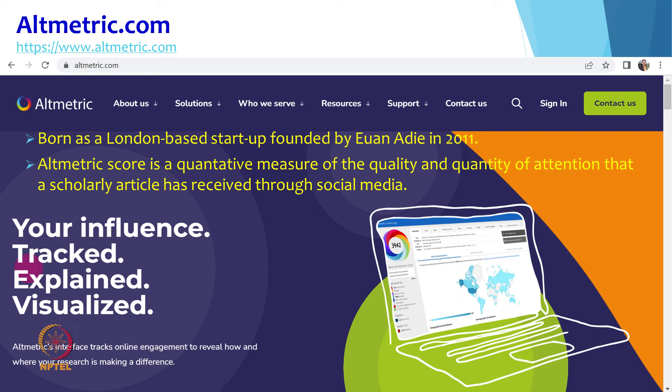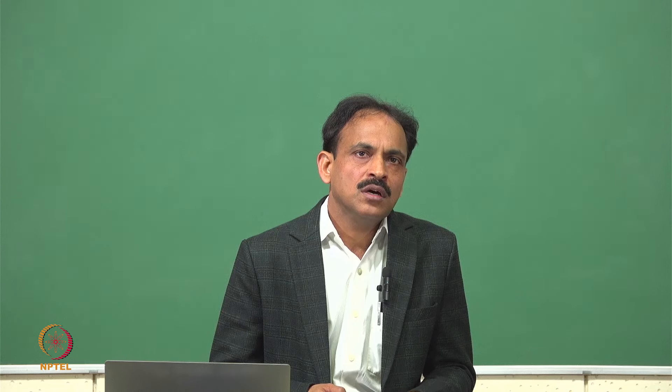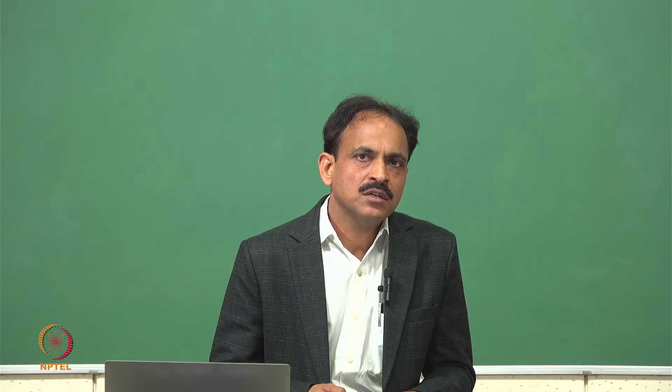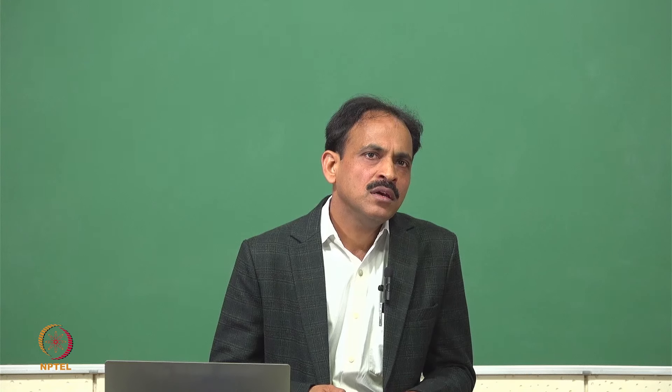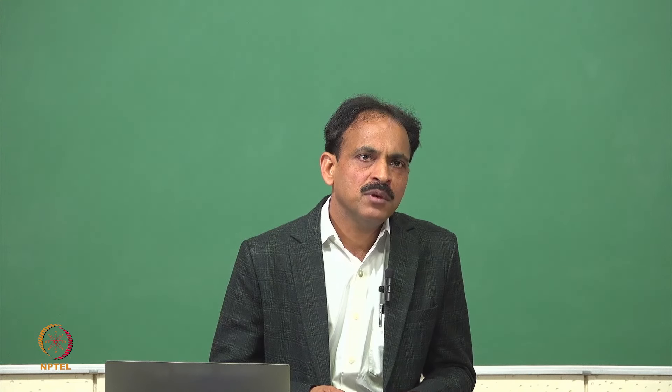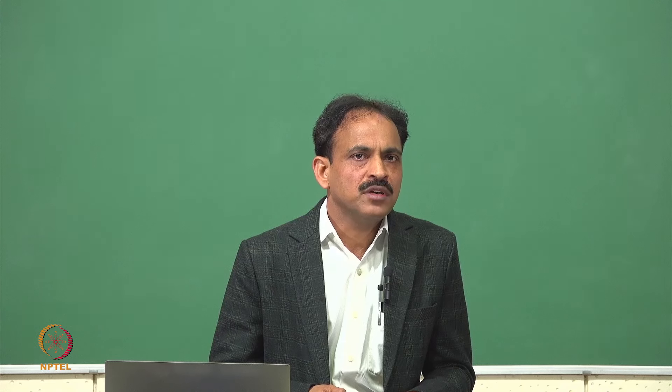Altmetric.com was born as a London-based startup founded by Euan Adie in 2011. Their mission was to make article-level metrics easy. Individual users and librarians can use Altmetric.com with a free account, while a commercial license is required for publishers, funders, or institutions. The Altmetric score is a quantitative measure of the quality and quantity of attention that a scholarly article has received through social media.